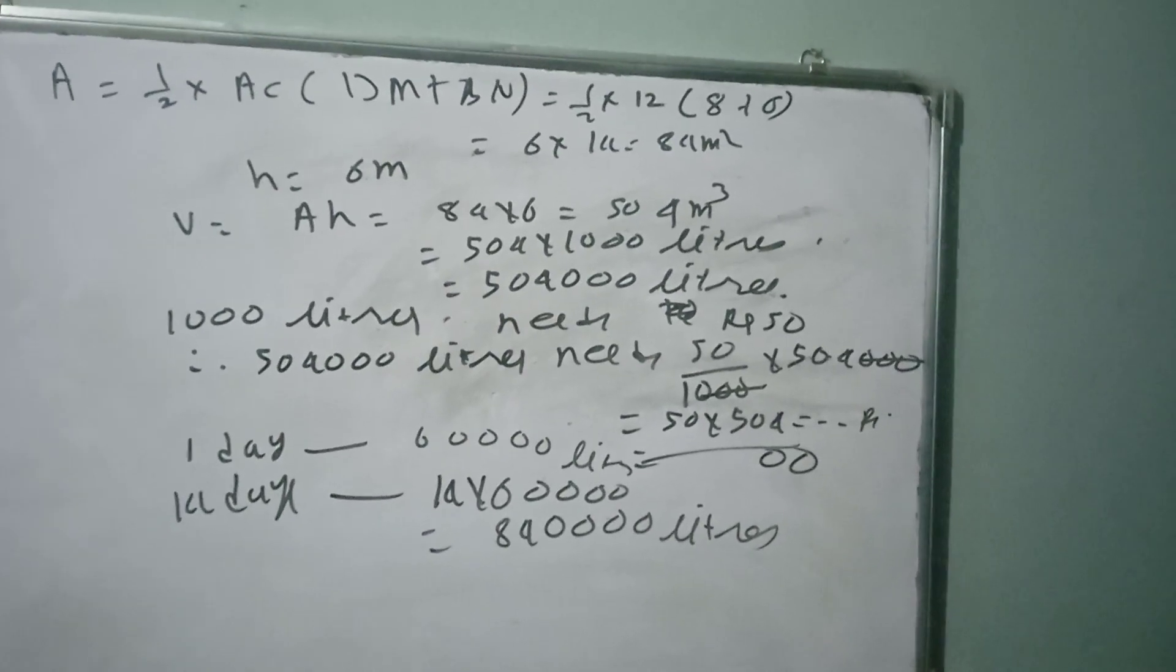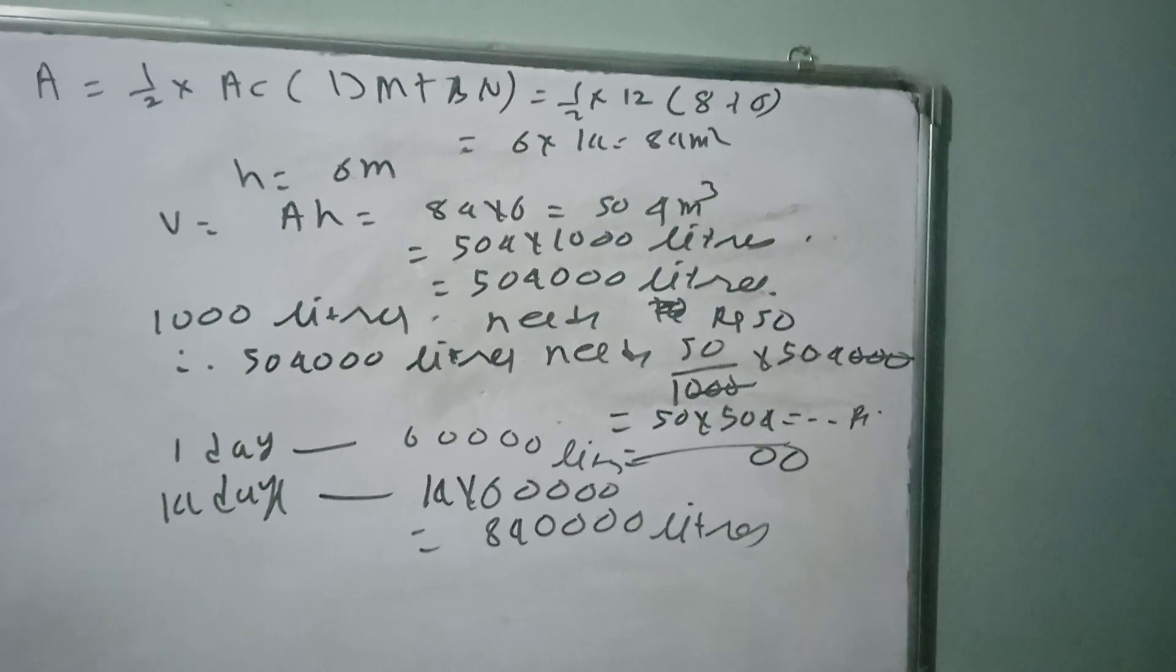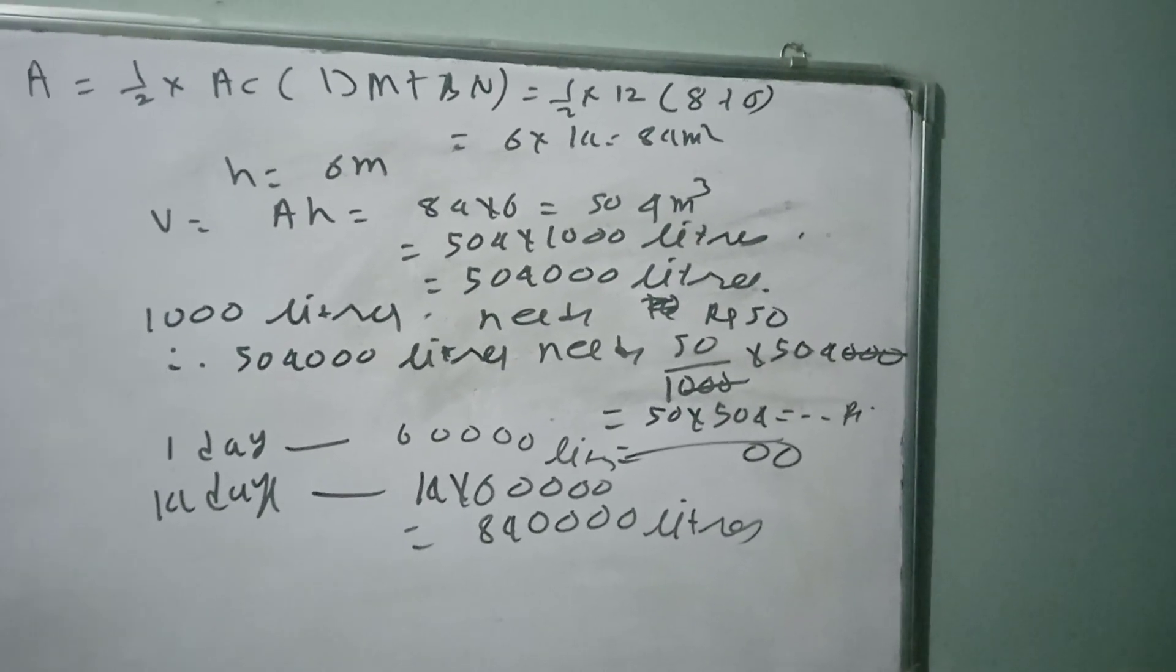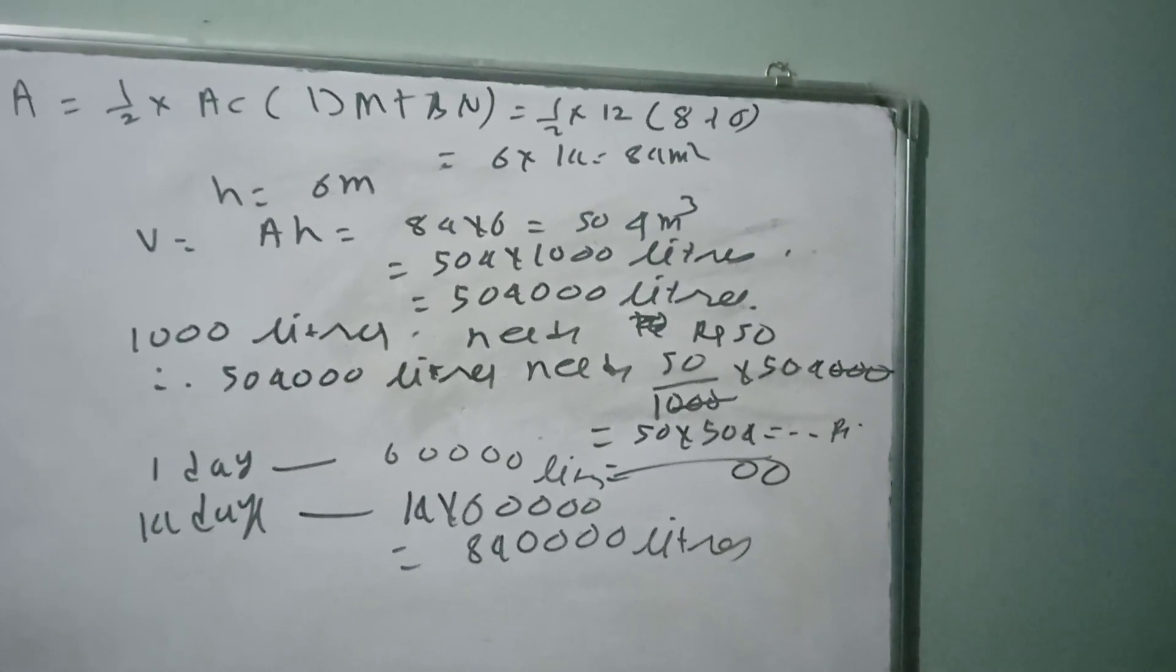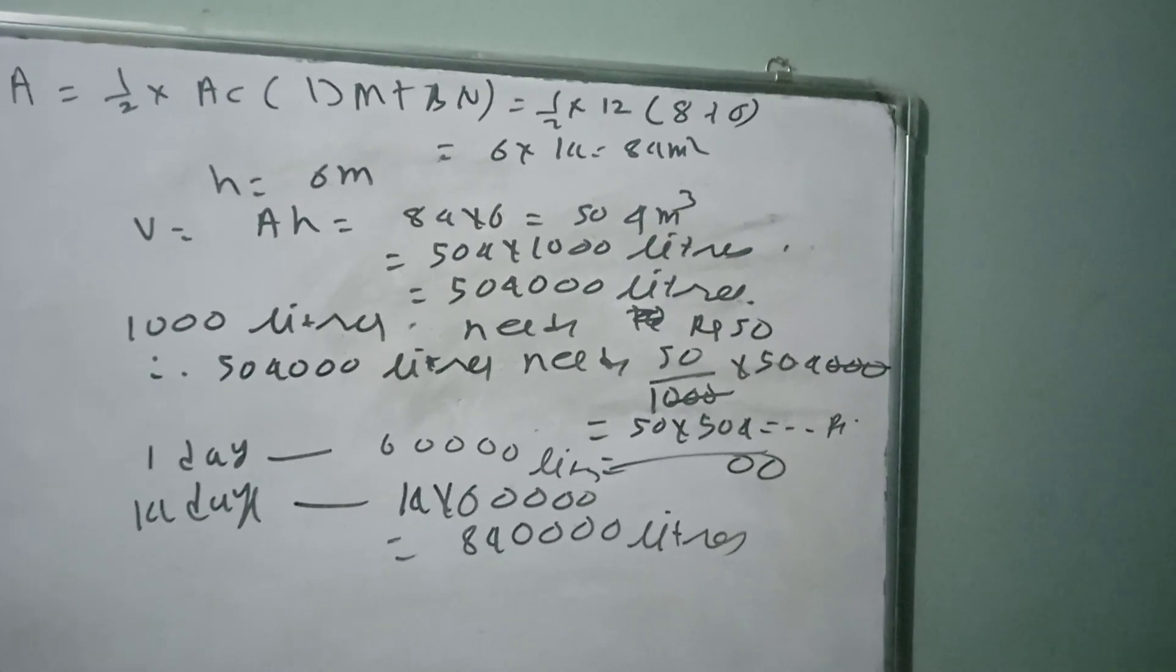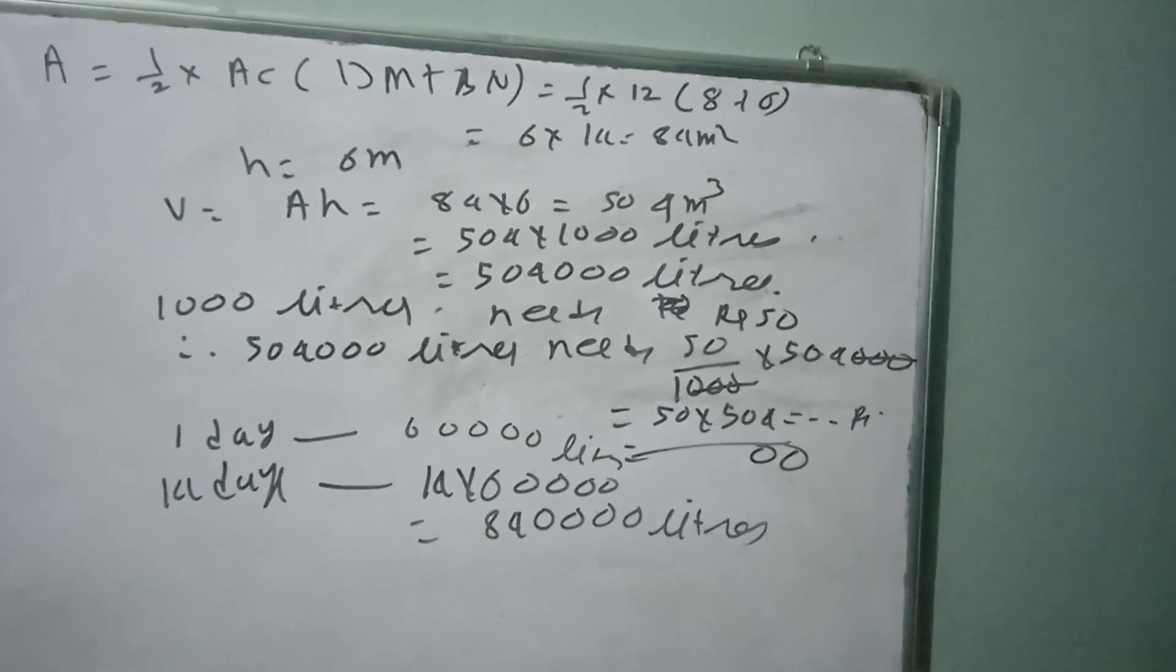Volume is area into height, 84 into 6 is 504 cubic meter. That means volume equals 504 into 1000 liters because 1 cubic meter equals 1000 liters. 504000 liters is the volume of the cubicle tank.